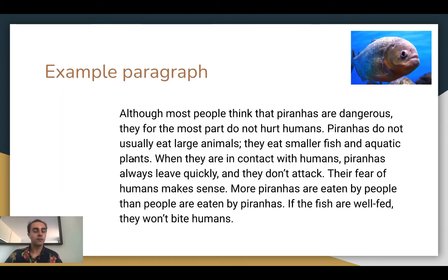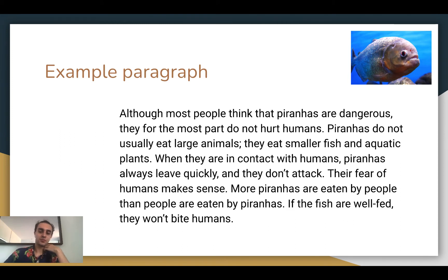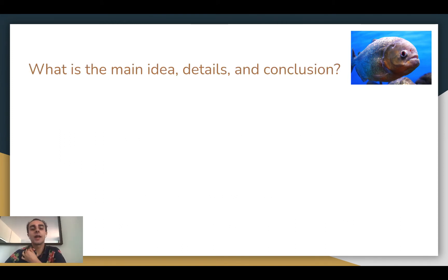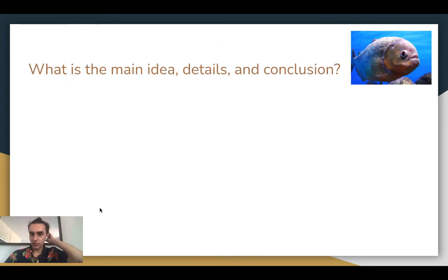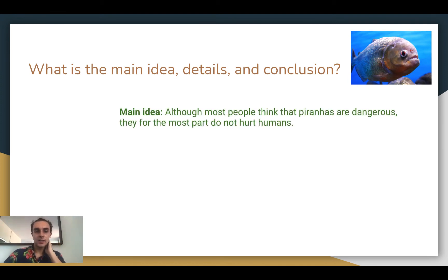An example of a paragraph that follows that structure is this paragraph about piranhas: 'Although most people think that piranhas are dangerous, they for the most part do not hurt humans. Piranhas do not usually eat large animals — they eat smaller fish and aquatic plants. When they are in contact with humans, piranhas always leave quickly and they don't attack. Their fear of humans makes sense. More piranhas are eaten by people than people are eaten by piranhas. If the fish are well fed, they won't bite humans.' So let's look at what is the main idea, details, and conclusion.